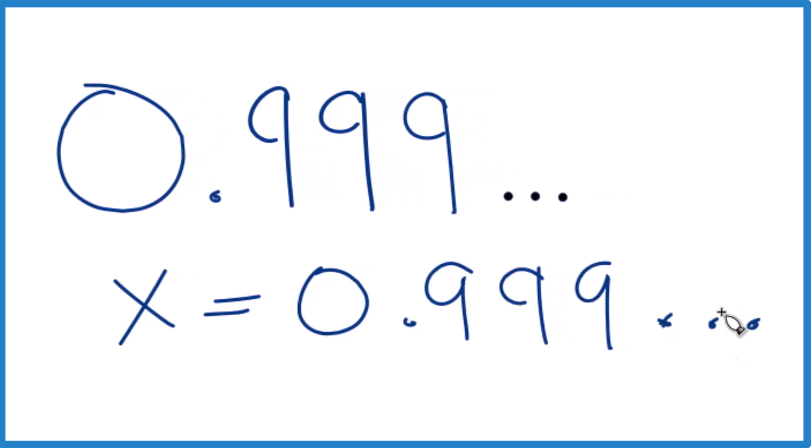So we'll start out with that, and then if we could get this to be a whole number, or at least have a whole number in it, that would be really helpful. So I'm going to multiply this side by 10, but then I also have to multiply this side by 10. It's algebra after all.